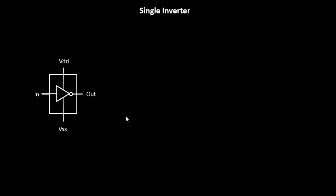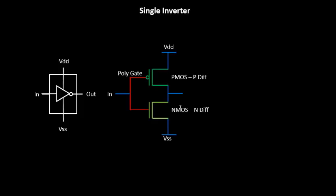The CMOS inverter is the basic building block behind any logic cell. If you open this inverter, it will have PMOS at the top and NMOS at the bottom — these are the transistors. If you deep dive into the transistors, this is nothing but the PMOS diffusion area or the P diffusion area, this is the N diffusion area, and this is the polysilicon gate. These are all metal lines — basically the fabrication elements of the transistors.